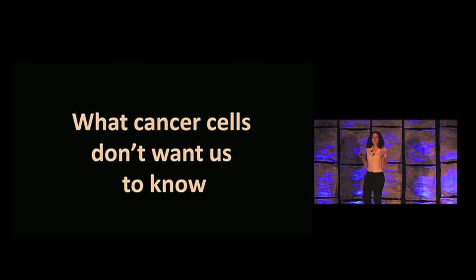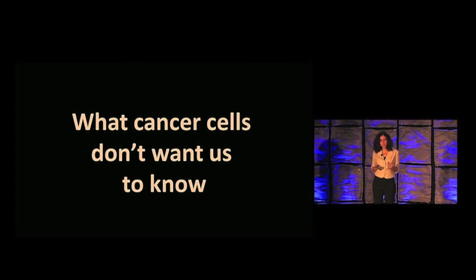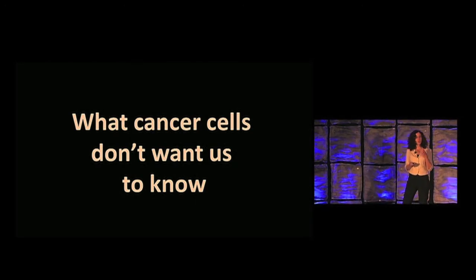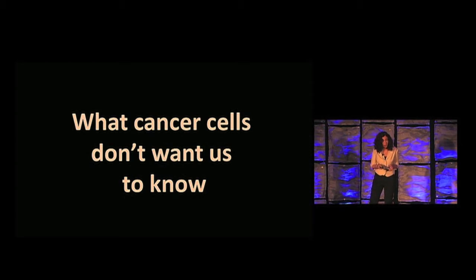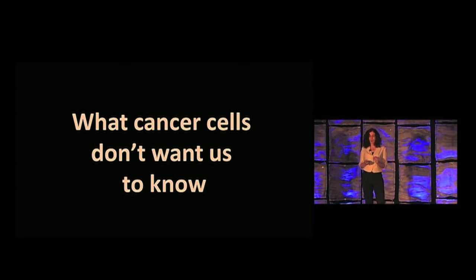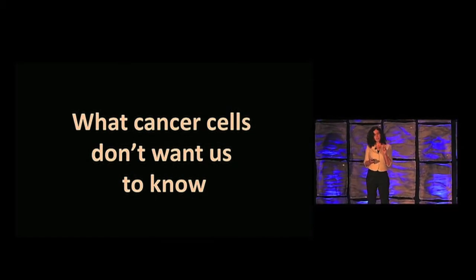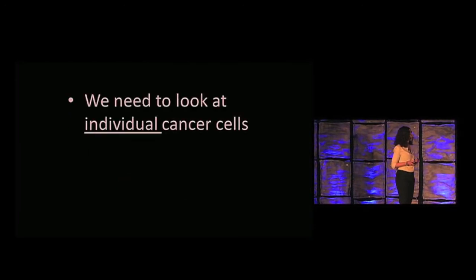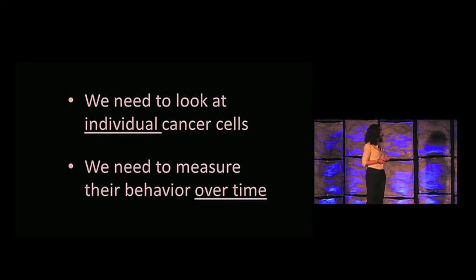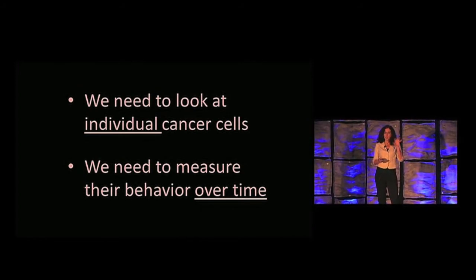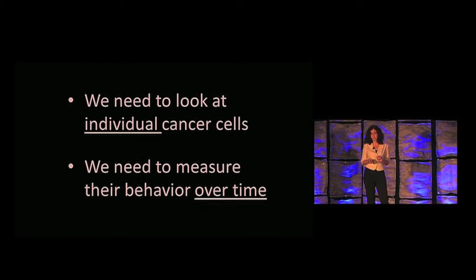Cancer cells are like killers. They're like criminals. They don't want to be caught and, as such, they have secrets. Our ability to discover those secrets depends on how we look at them, how we measure them, or how we spy on them. In this talk, I would like to highlight two very simple but very important principles when studying cancer. The first is that we need to look at individual cancer cells. The second is that we need to measure their behavior over time.